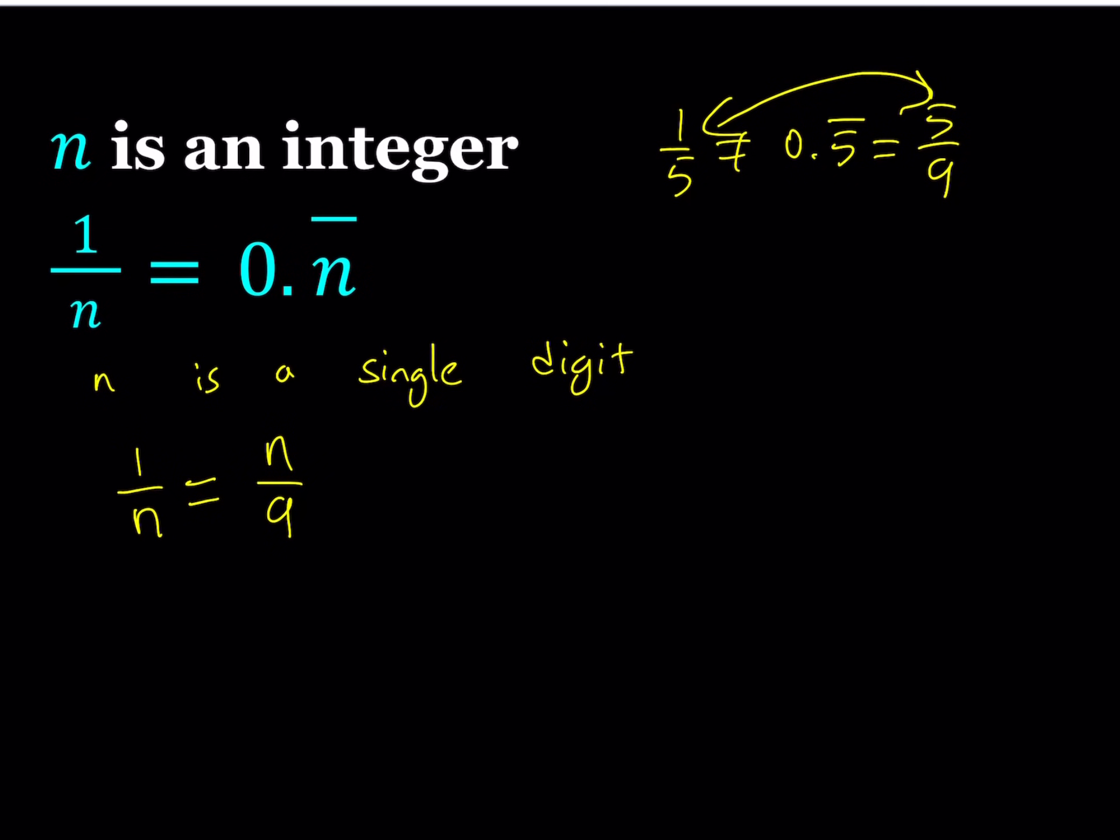You know there's a proof about this like you can write this as 0.n plus 0.0 n plus 0.00 n so on and so forth and add this as a geometric series. So I kind of gave you a shortcut there. From here we get n squared equals 9 and since n is a positive integer, well we didn't say that but since we're talking about a repeating decimal it has to be a positive integer.